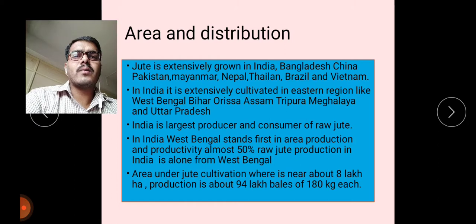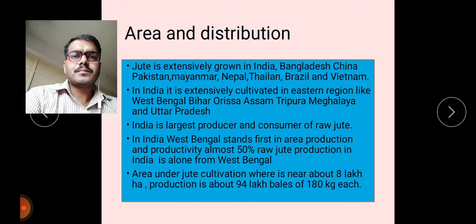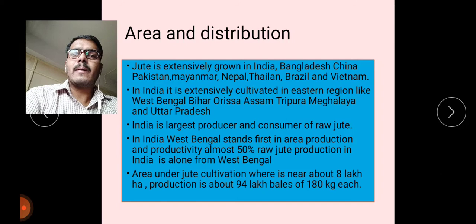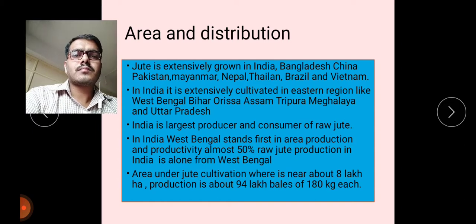Major jute-growing states in India include West Bengal, Bihar, Orissa, Assam, Tripura, Meghalaya, and Uttar Pradesh. India is a large producer and consumer of raw jute. West Bengal stands first in area and production — about 50% of raw jute production in India comes from West Bengal.